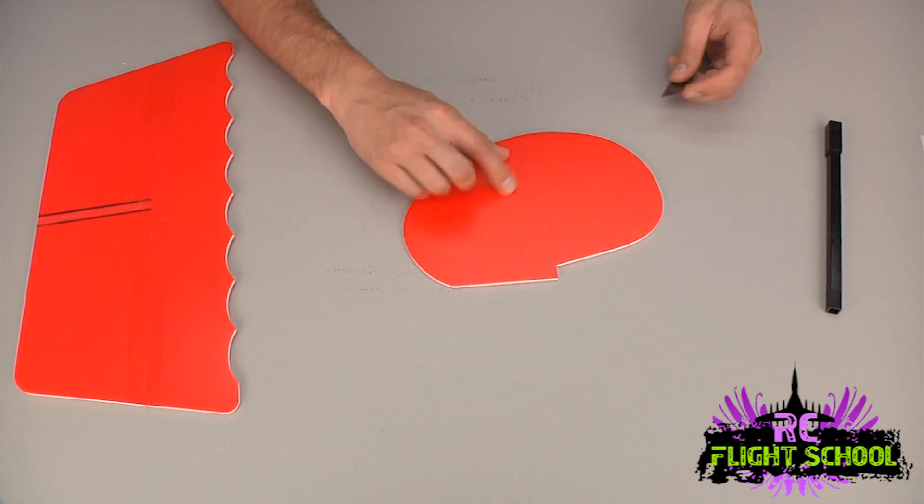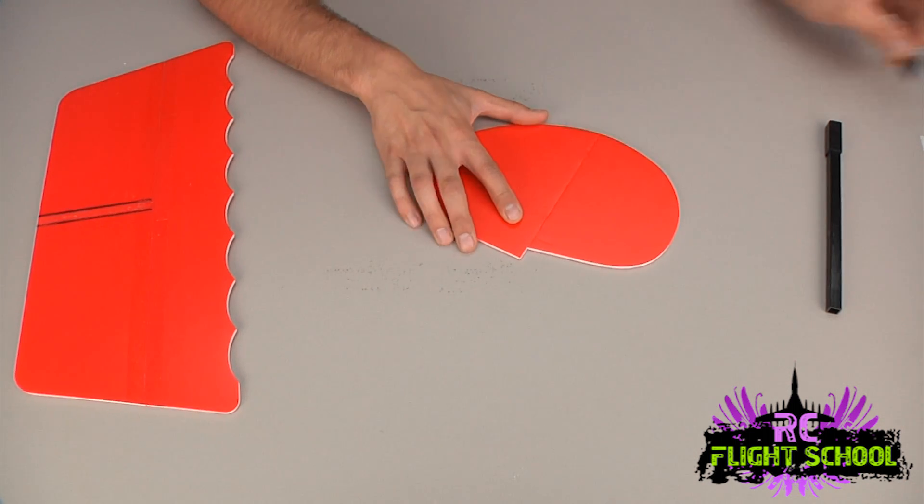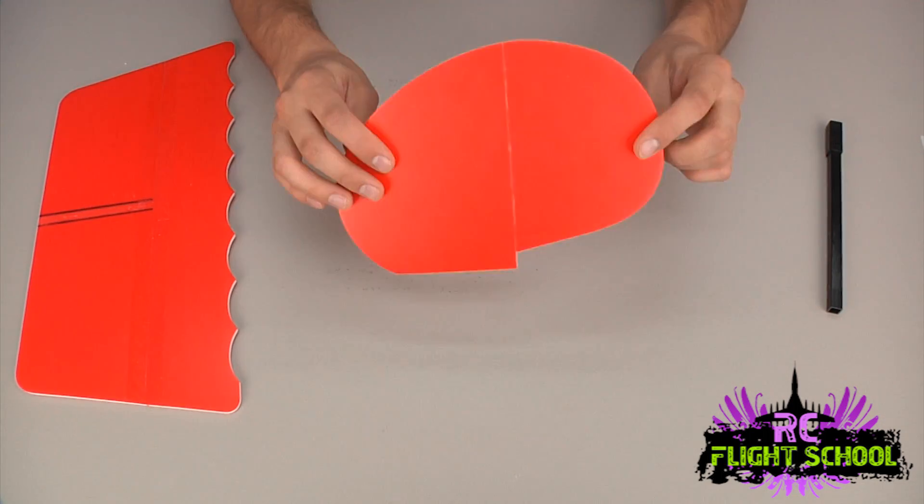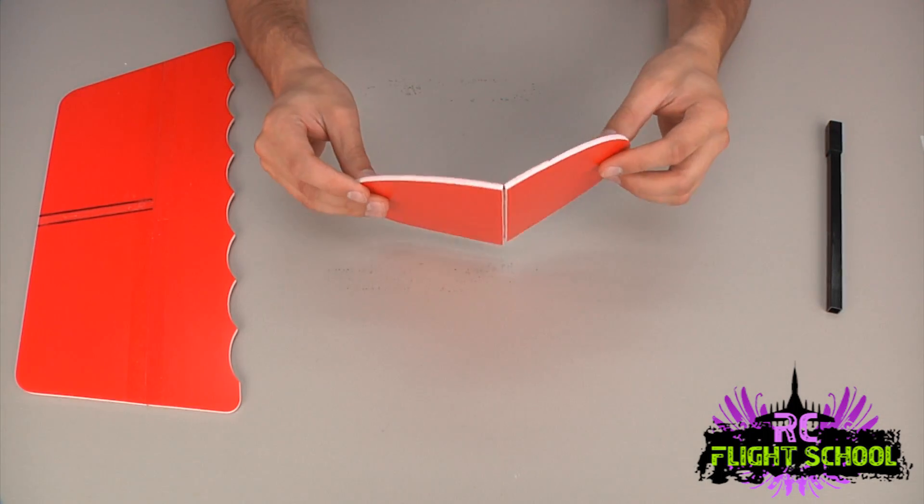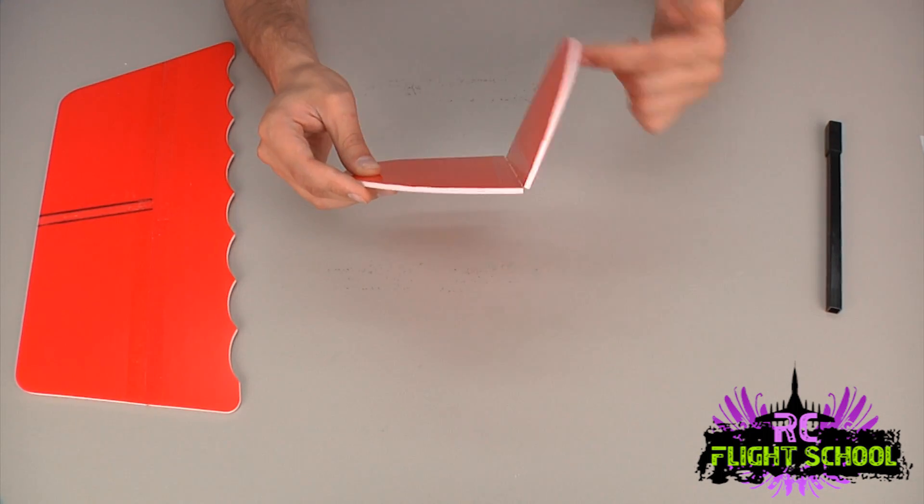Now that we're hinged we can flip this over. And there's two reliefs here we want to cut out so that it's able to pivot. If I just slice through these just like that. Now you can see she's able to pivot like so. But because I haven't cut the relief on the other side it only goes one way. I can only fold it this way.